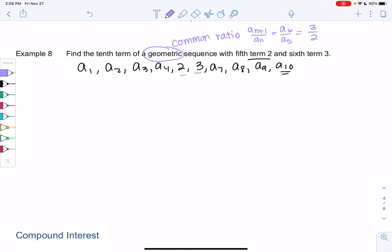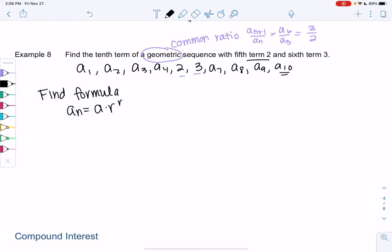People are going to see this a little bit differently, so I'm going to show you how to find the formula, and then you might decide the other way makes more sense. If we want to find the formula, we found the ratio, but we need to find a. The formula was a_n equals a times r to the n minus 1. We know r is three halves. Let's see what else we can do to figure this out. I'm going to plug in the fifth or sixth term; it doesn't matter which one, but these are the only two that I know.